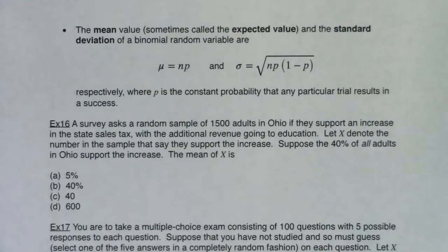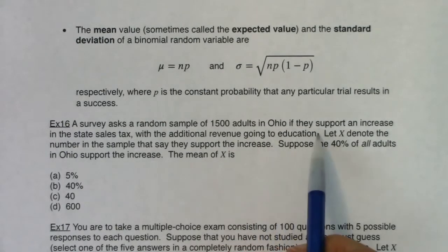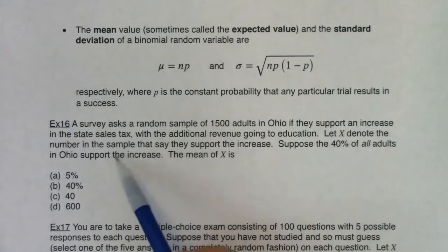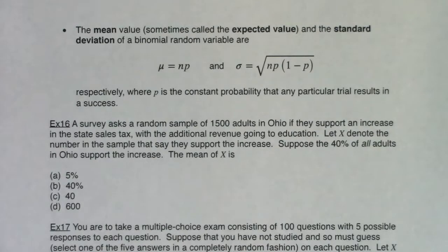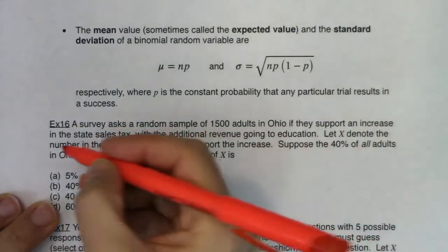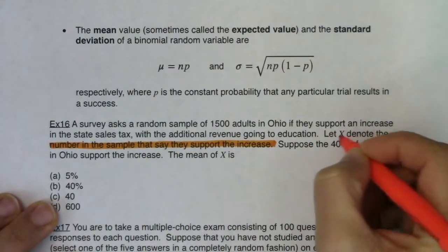Let's look at a problem and see if we can figure out the mean of this random variable. A survey asks a random sample of 1500 adults in Ohio if they support an increase in the state sales tax with the additional revenue going to education. Let X denote the number in the sample that say they support the increase. Suppose 40% of all adults in Ohio support the increase — what is the average of X? The variable in this problem is spelled out: X is the number in the sample that say they support the increase.